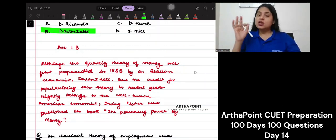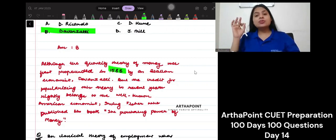The quantity theory of money was first propounded in 1588, too early, and it was given by an Italian economist and his name was Devinzati.